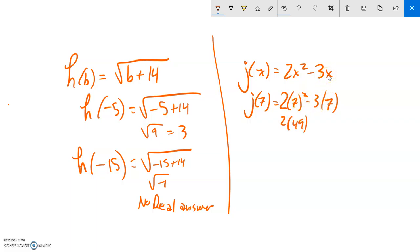2 times 49 minus 21. What is that? 98 minus 21 is 76. So I could say that j of 7 is 76. In other words, if I take the input 7 into the process j, it spits out the value 76.